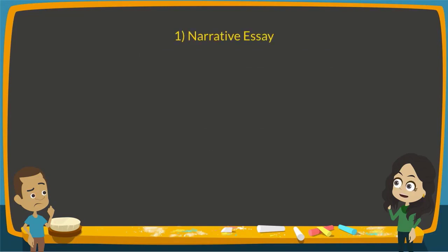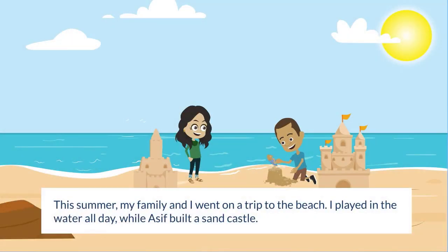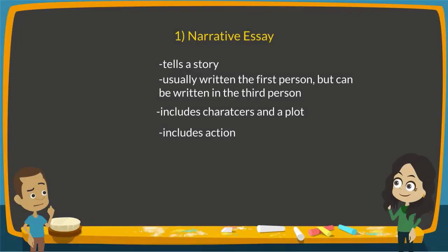The first is a narrative essay. A narrative essay tells a story about a real-life event. It's usually written in the first person, but it can also be written in the third person when the writer is not talking about a personal experience. It usually includes action. For example, these lines from an essay about a summer holiday: 'This summer, my family and I went on a trip to the beach. I played in the water all day while Asif built a sandcastle.'